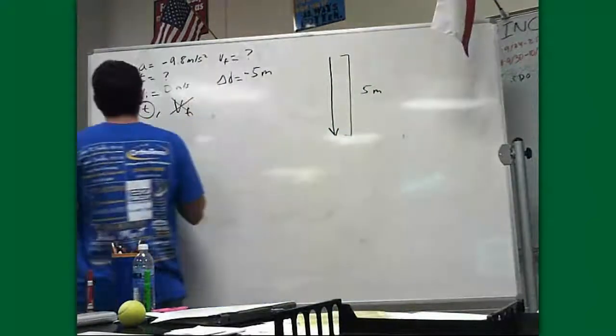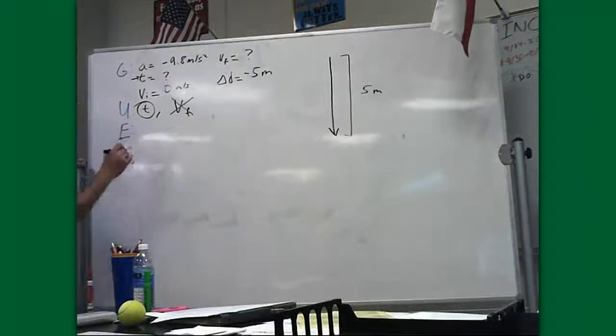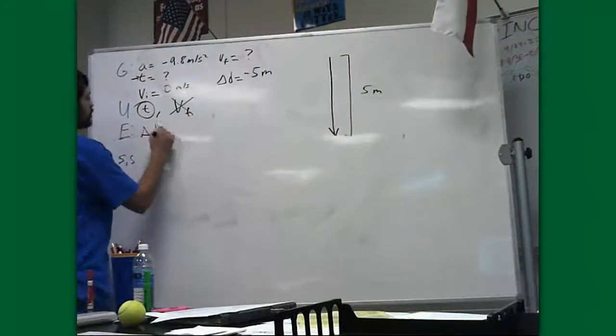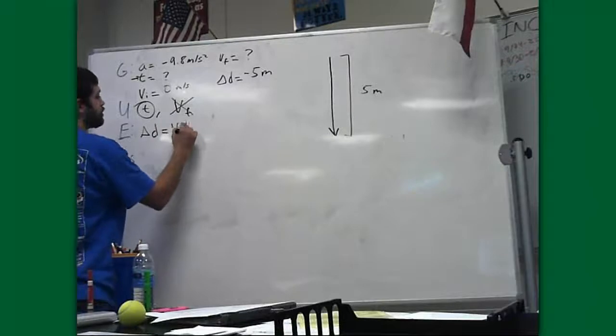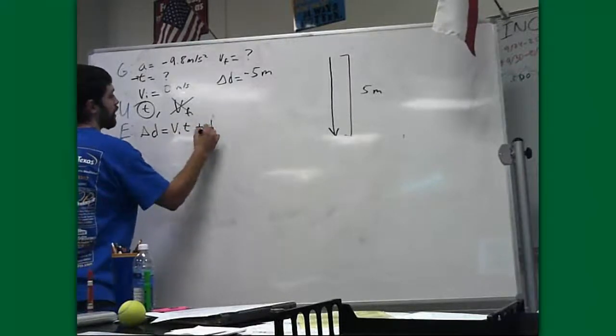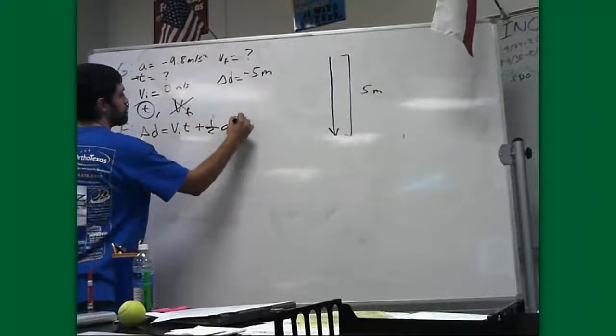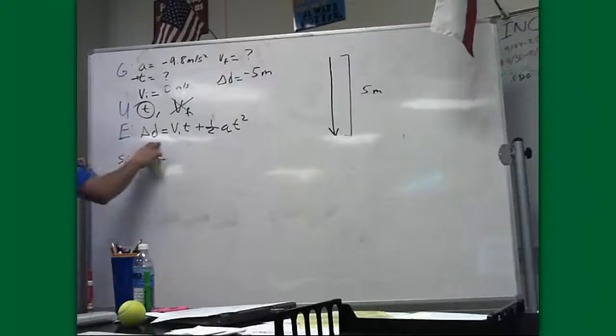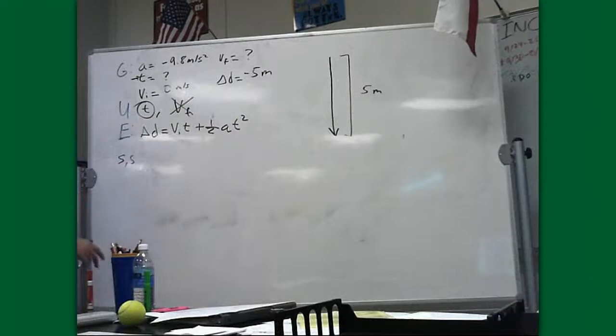All right. So, the equation we're going to use, if you found this, the right equation is delta D equals VIT plus 1 half A T squared. That's our equation. Make sure to write it out with your letters before you substitute anything in. Now, we can substitute and solve.